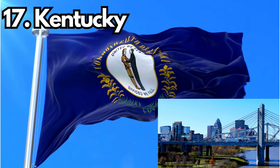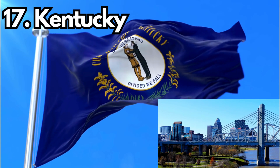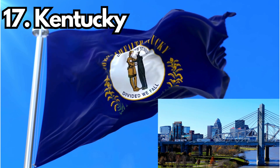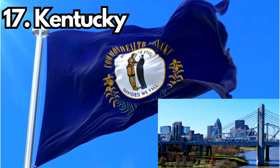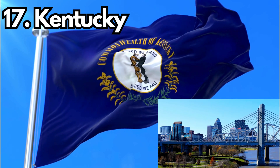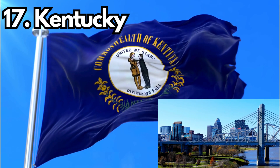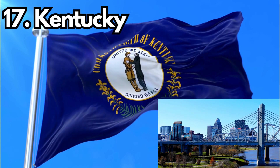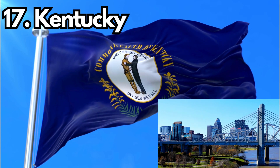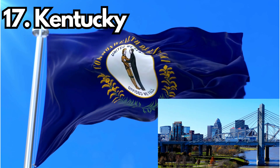17. Kentucky. Design: The Kentucky state flag features the state seal on a navy blue field. Meaning: The state seal includes a pioneer and a statesman embracing, symbolizing the Commonwealth's hope for the future. History: The current design was adopted in 1918.